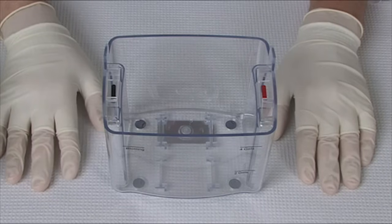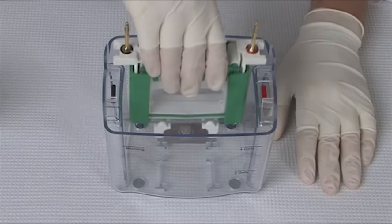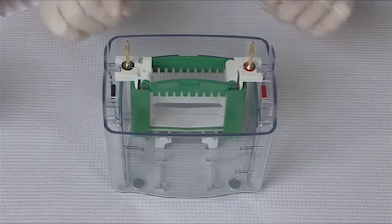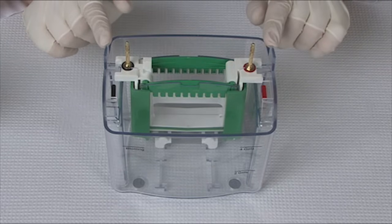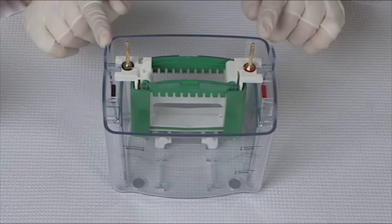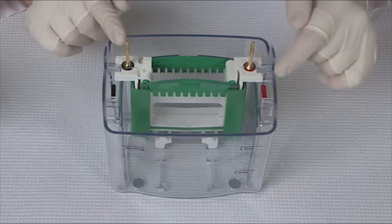To begin assembling the MiniProtein TetraCell, take the electrode assembly module and place it in the TetraCell tank. It is important to align the banana plugs on the electrode module with the tabs on the tank, and make sure that the red marking that designates the anode lines up with the red hatch mark on the TetraCell tank.